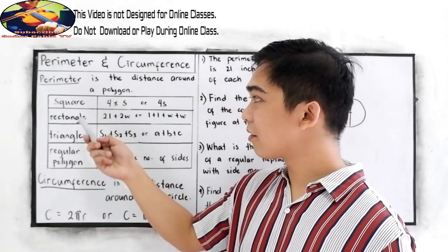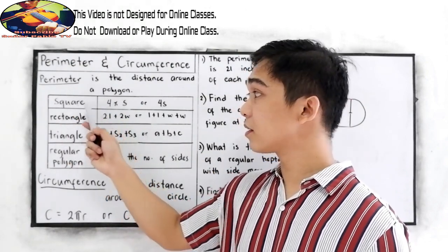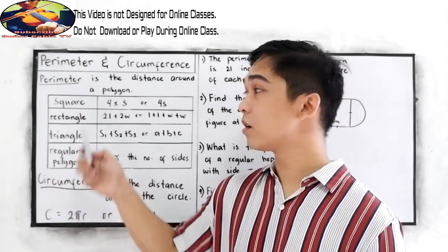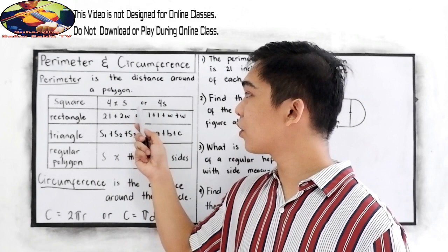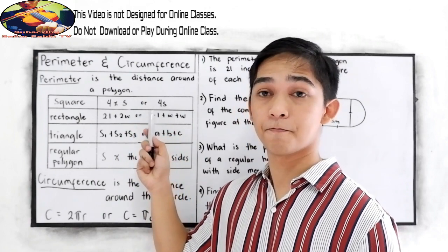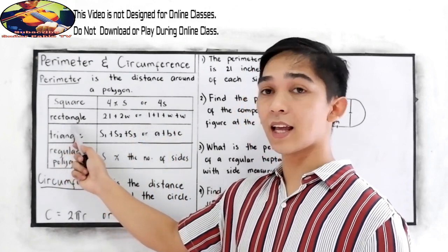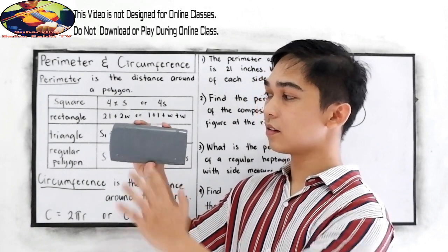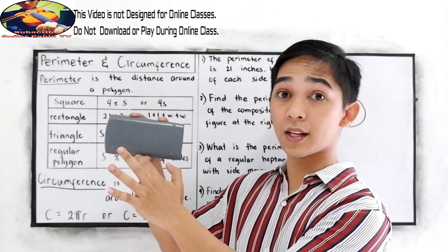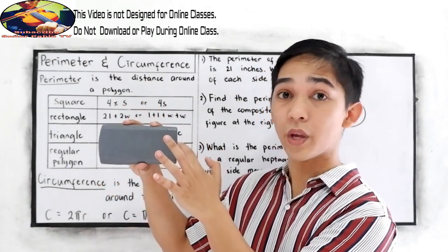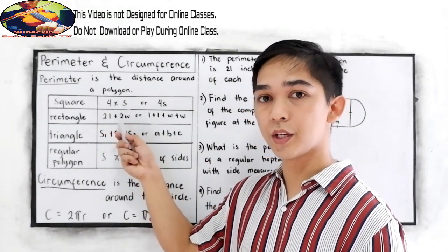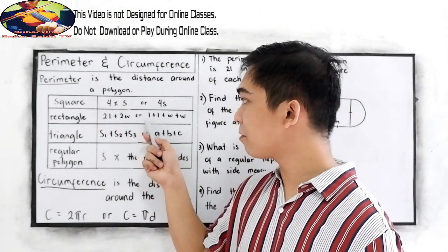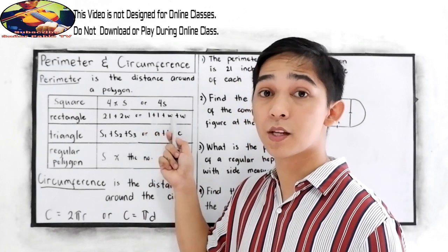So we have a formula for a square. Since a square has equal sides, that is four times the length of the side, or simply 4 times s. We have the rectangle. The longest side is what we call the length and this is the width. So we have 2 length plus 2 width, or simply length plus length plus width plus width.